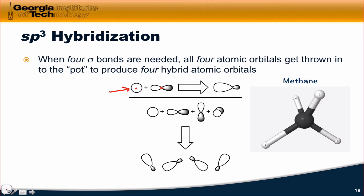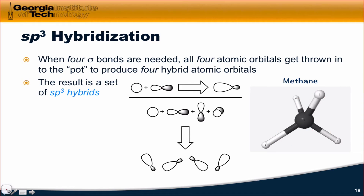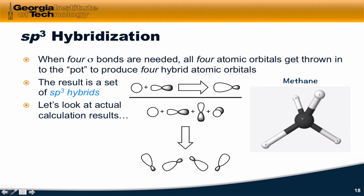Hybridization involves the on-atom combination of S and P orbitals to generate hybrids. When we need four sigma bonds, we use all four atomic orbitals to produce four hybrids, and the four hybrids are aligned along the corners of a tetrahedron. The resulting hybrid orbitals are called SP3 hybrids, and there are four of them. Remember the core idea of molecular orbital theory: the number of atomic orbitals we put in equals the number of molecular orbitals we get out — the same idea applies to hybrids.